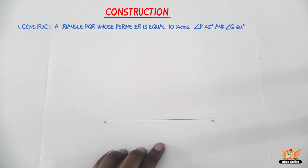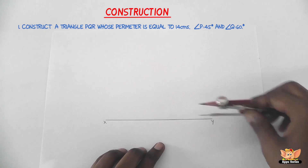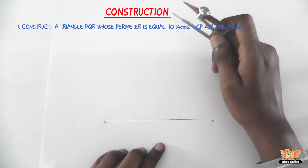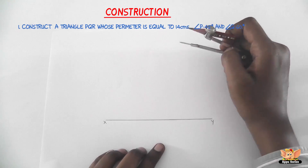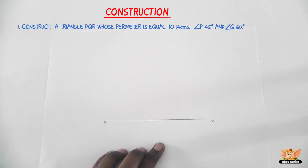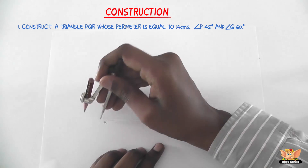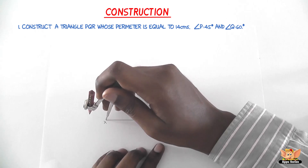The second step is to construct angle YXD equal to 45 degrees. To construct 45 degrees, notice that 45 degrees is exactly half of 90 degrees. We first have to construct 90 degrees and then bisect it to get 45 degrees.